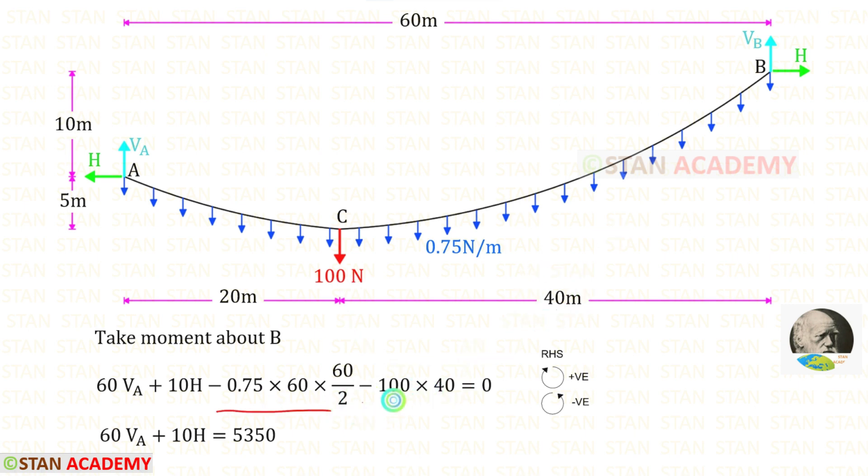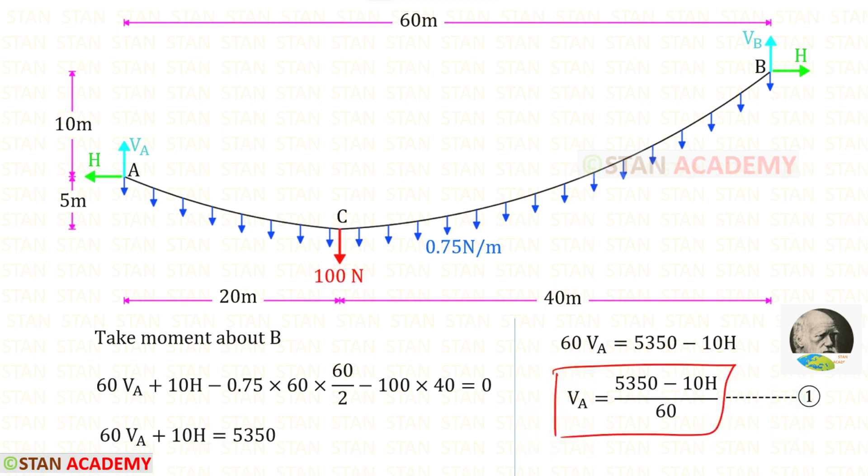We can take these two terms on the other side and add them to get 5350. Let us take 10H on the other side so it will be negative, then divide by 60. Let us keep this expression as equation number 1.